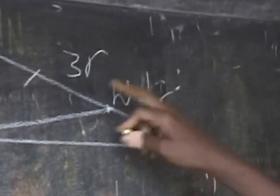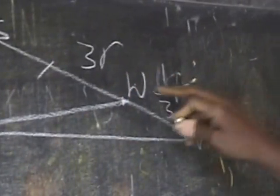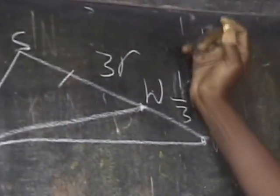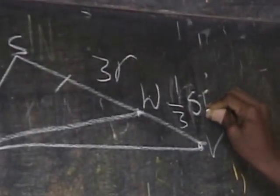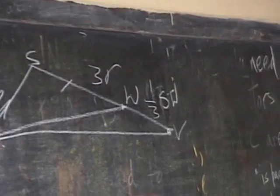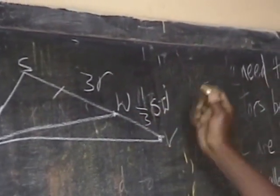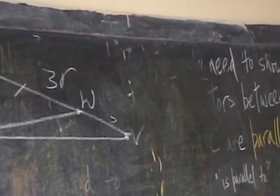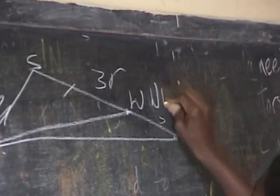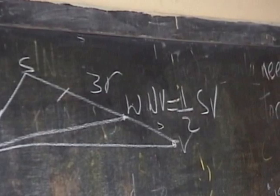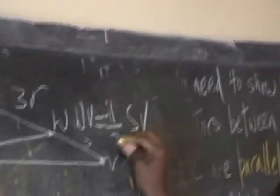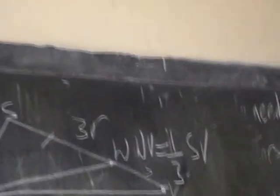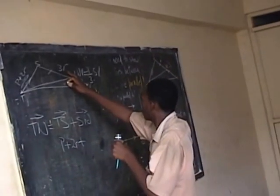The teacher addresses Dervin directly: 'Dervin, if V to S is 3R, what is WV?' Dervin answers: 'One third.' Teacher prompts: 'One third SV.' They work through: 'From V to S is 3R, so WV equals one third SV. V equals one third SV.' Teacher asks: 'So what is SV?' Dervin replies: 'SV is 3R.' Teacher notes: 'That was VS.'